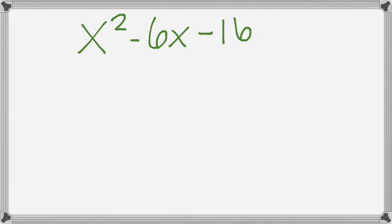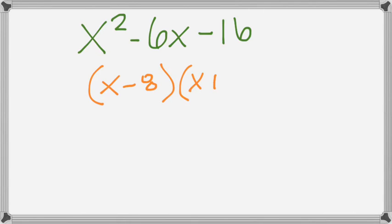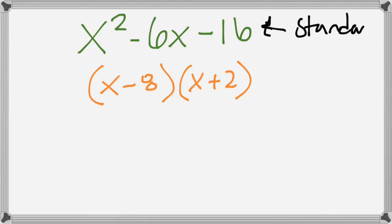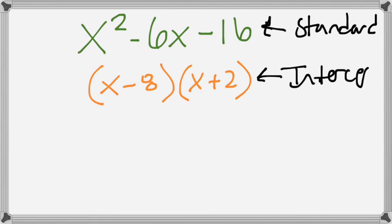If I were to write this in factored form, we can go through the steps of factoring, but just to save some time, the factored form of this particular equation would be (x minus 8)(x plus 2). So that's factored form or intercept form.